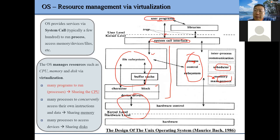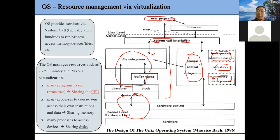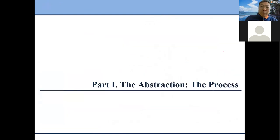If we have multiple processes running with limited physical CPUs, we have to decide which one to run — what is the mechanism for scheduling? Another issue is inter-process communication — how to do communication and so on.